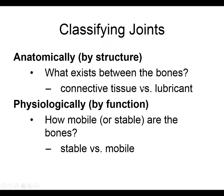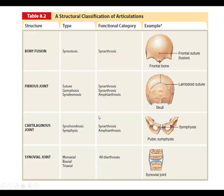When classifying joints by structure, we ask: what separates the bones from each other? Is it connective tissue, a lubricant like synovial fluid, fibrous connective tissue, or cartilage? The other classification, as we will see, is based on mobility: is it immobile, slightly mobile, or highly mobile?